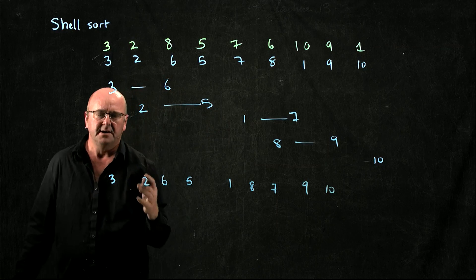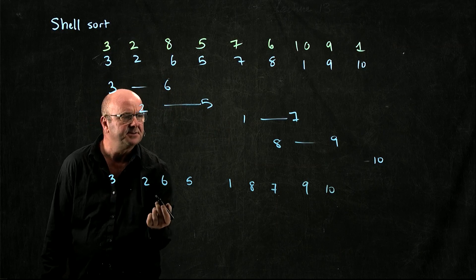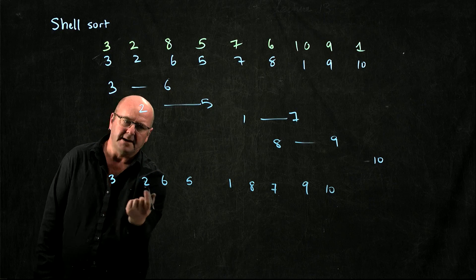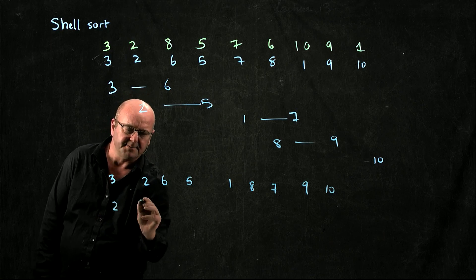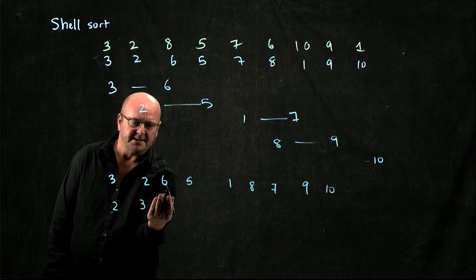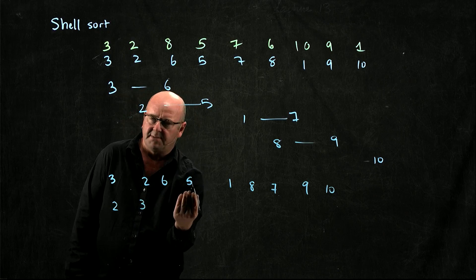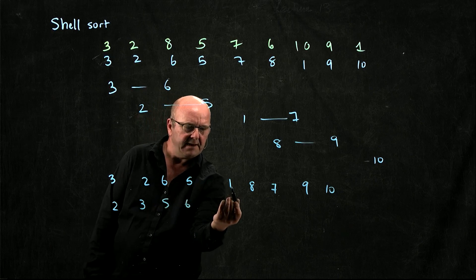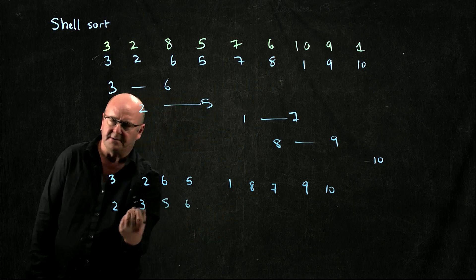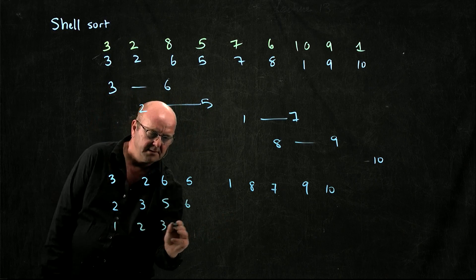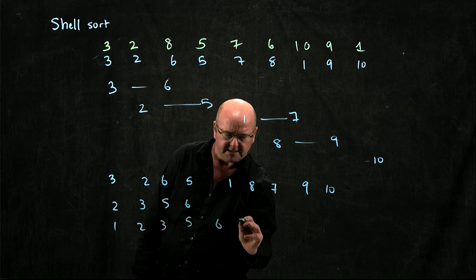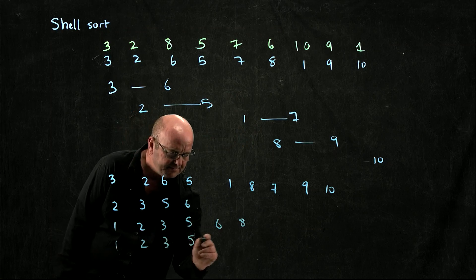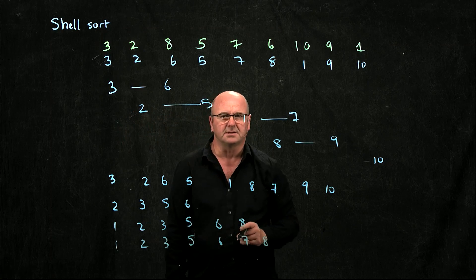And so basically now my gap is 1 and I have a regular insertion sort. So I take an element and I compare it to the thing before it. In this case I swap the 2 and the 3. Now I take the 6, I compare it to the thing before it. It's already sorted. But when I take the 5, I would swap it. Now when I take the 1, I have to move it all the way to the front. Now when I take the 8, it's okay. Now when I take the 7, I'll swap it with the 7 and so on.